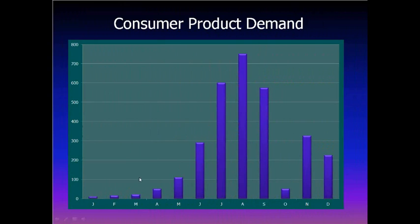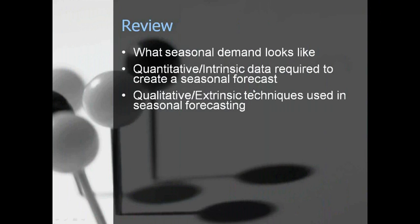Wrapping this up: what we've done is determined what the shape of the demand is going to be — that's the quantitative intrinsic — and how high the peaks are going to be going into year four. In brief review, seasonal demand has a very well-defined season, and it doesn't have to have just one season — you can have multiple seasons during the year. You need the numbers of what you've shipped, which is the internal data, and you need the qualitative extrinsic data about where the market's going and what the forecasting folks think is going to happen with your product.